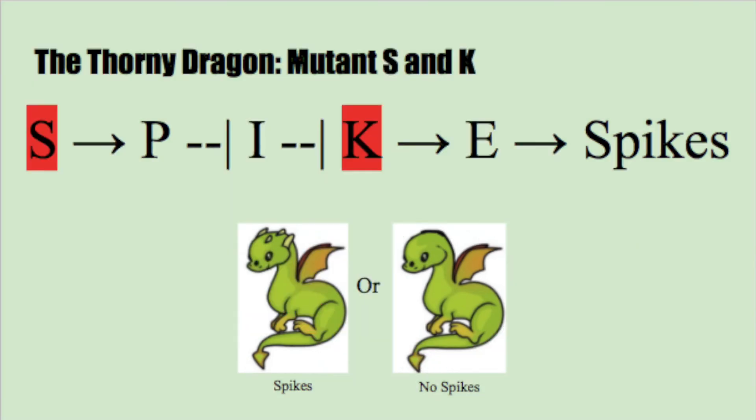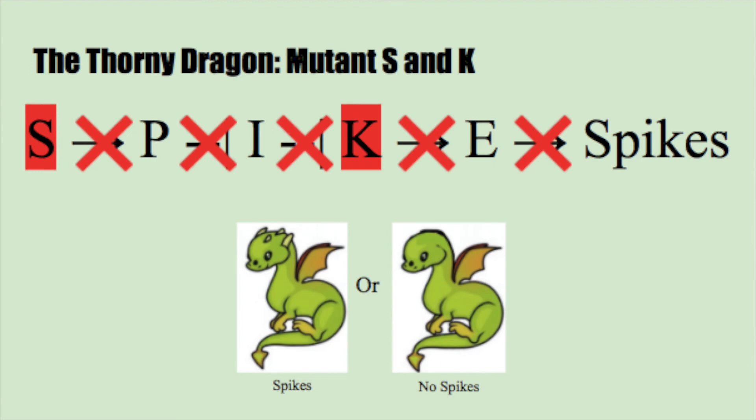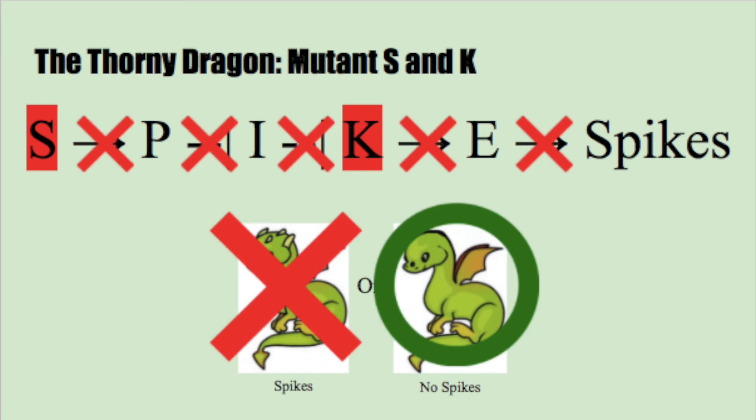The last mutation we will look at is a mutation on the S and K gene. Since the S gene was removed, it cannot activate the P gene. This causes the I gene to inhibit the K gene, but since the K gene was removed as well, it cannot activate the E gene anyway. This is causing the dragon to have no spikes.